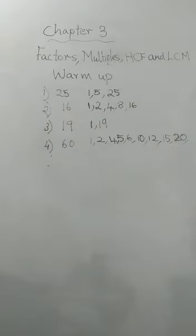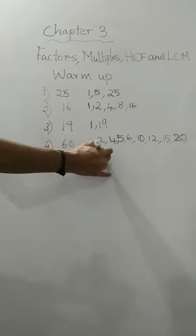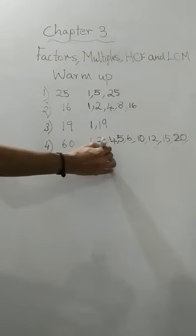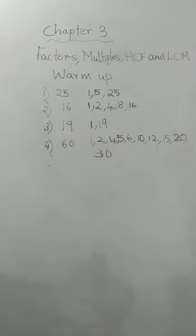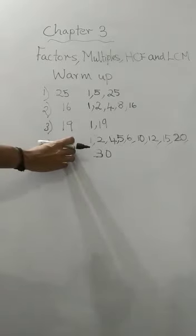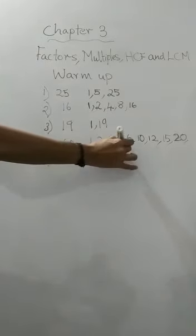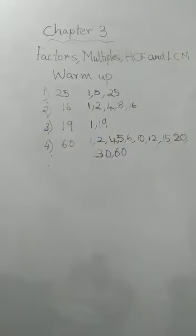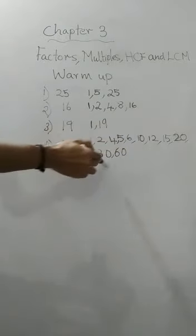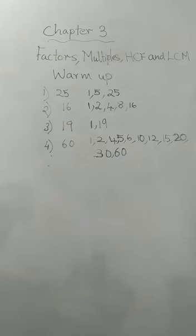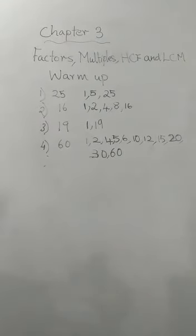Then what else? 25, no. 30 will be there. Then 31, 32, none of those. The last number you will write the number itself, 60. You can divide with all these numbers. How many are there? 11 factors are there for 60. It's a long line.